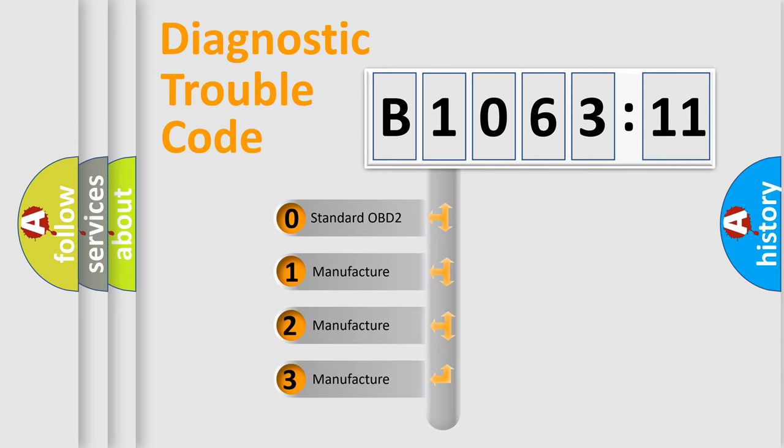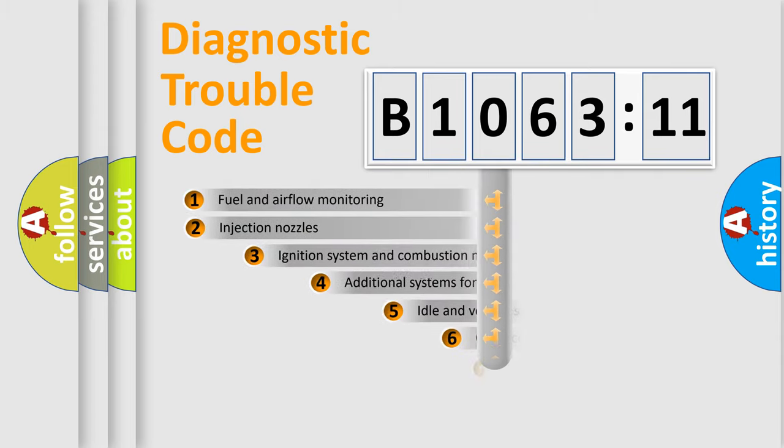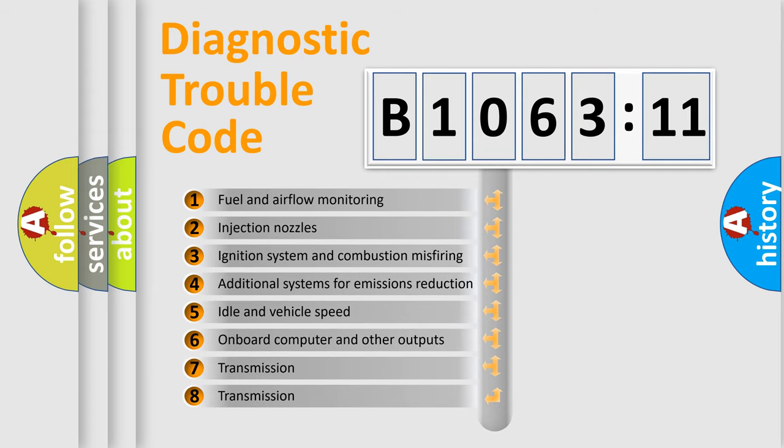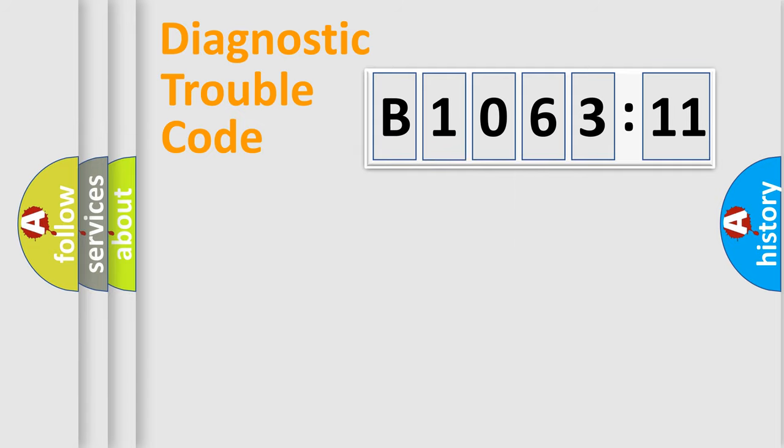If the second character is expressed as zero, it is a standardized error. In the case of numbers 1, 2, 3 it is a more prestigious expression of the car-specific error. The third character specifies a subset of errors. The distribution shown is valid only for the standardized DTC code.